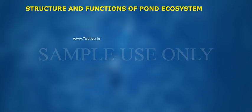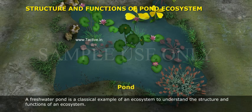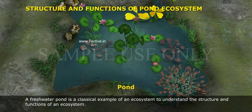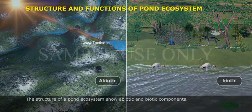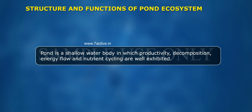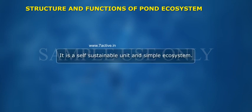Structure and Functions of Pond Ecosystem. A freshwater pond is a classical example of an ecosystem to understand the structure and functions of an ecosystem. The structure of a pond ecosystem shows abiotic and biotic components. A pond is a shallow water body in which productivity, decomposition, energy flow, and nutrient cycling are well exhibited. It is a self-sustainable unit and simple ecosystem.